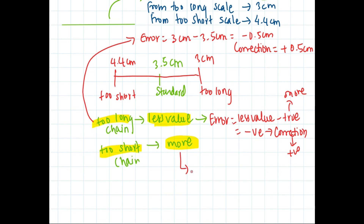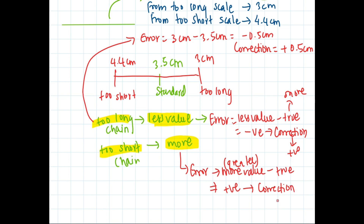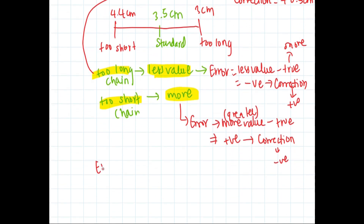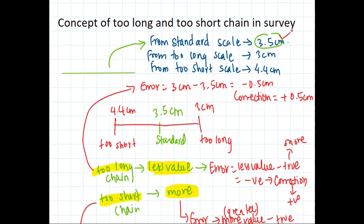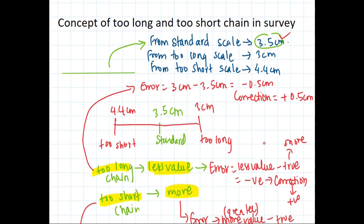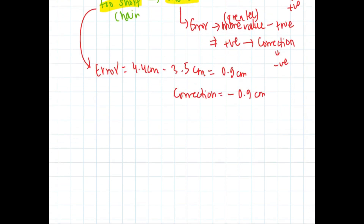Similarly, in the case of too short: the observed value is more than the true value, so error is positive and correction will be negative. From the too short scale, the observed value was 4.4 cm and the standard value is 3.5 cm, so error is 4.4 minus 3.5 = positive 0.9 centimeter, and correction is negative 0.9 centimeter.